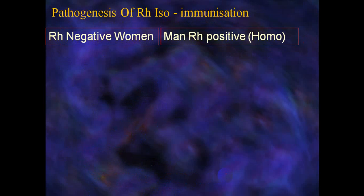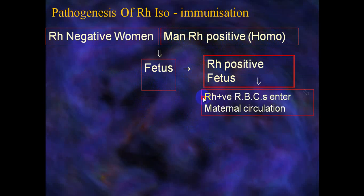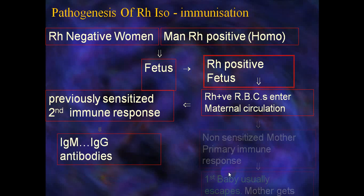Pathogenesis: if the mother is RH-negative and the husband is RH-positive, either homozygous or heterozygous, and the fetus is RH-positive, then RH-positive RBCs enter the maternal circulation. In a non-sensitized mother, this triggers a primary immune response. The first baby usually escapes harm. If previously sensitized, a second immune response produces IgM and IgG antibodies, which may affect the fetus in subsequent pregnancies or in the same pregnancy at an advanced gestational age, leading to hemolysis.